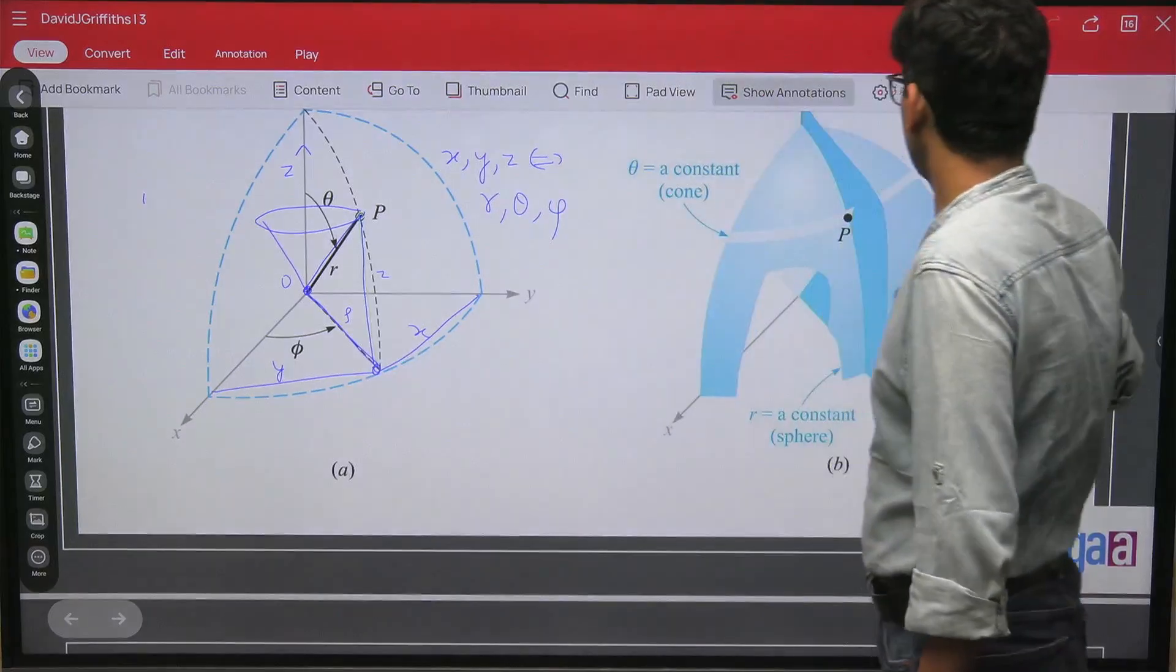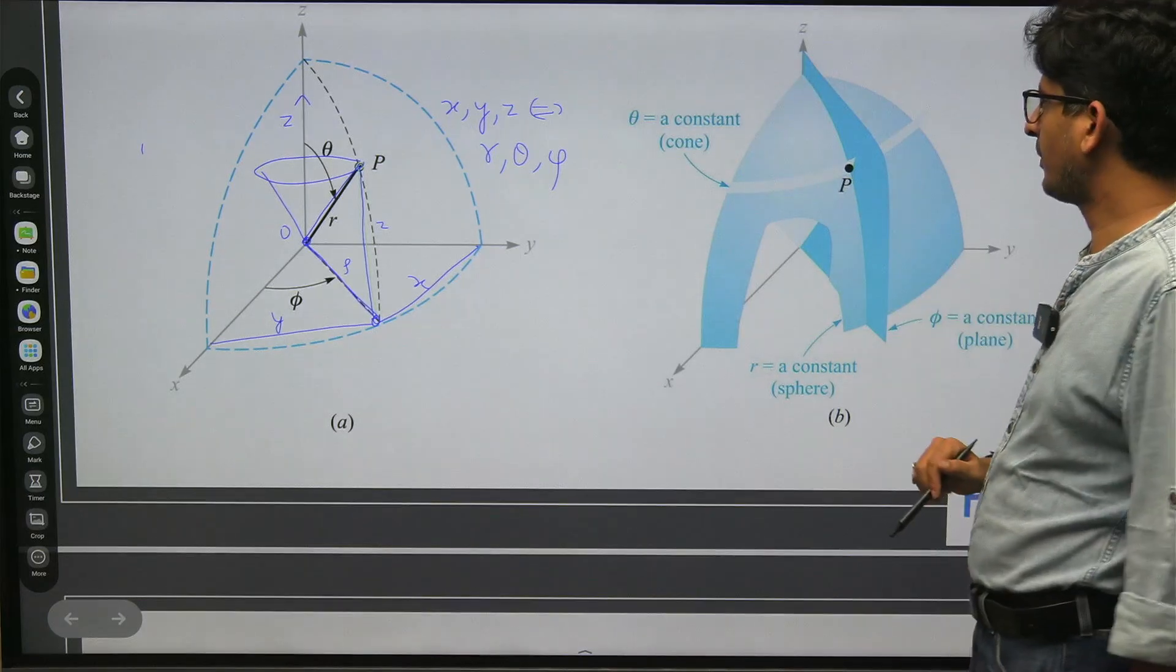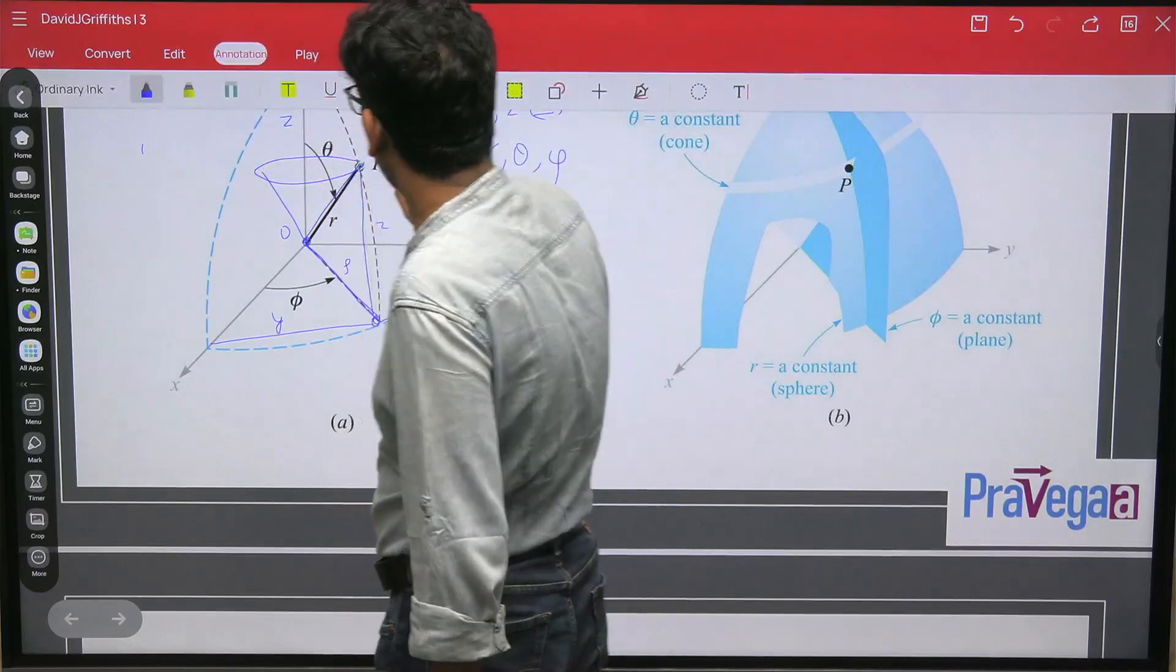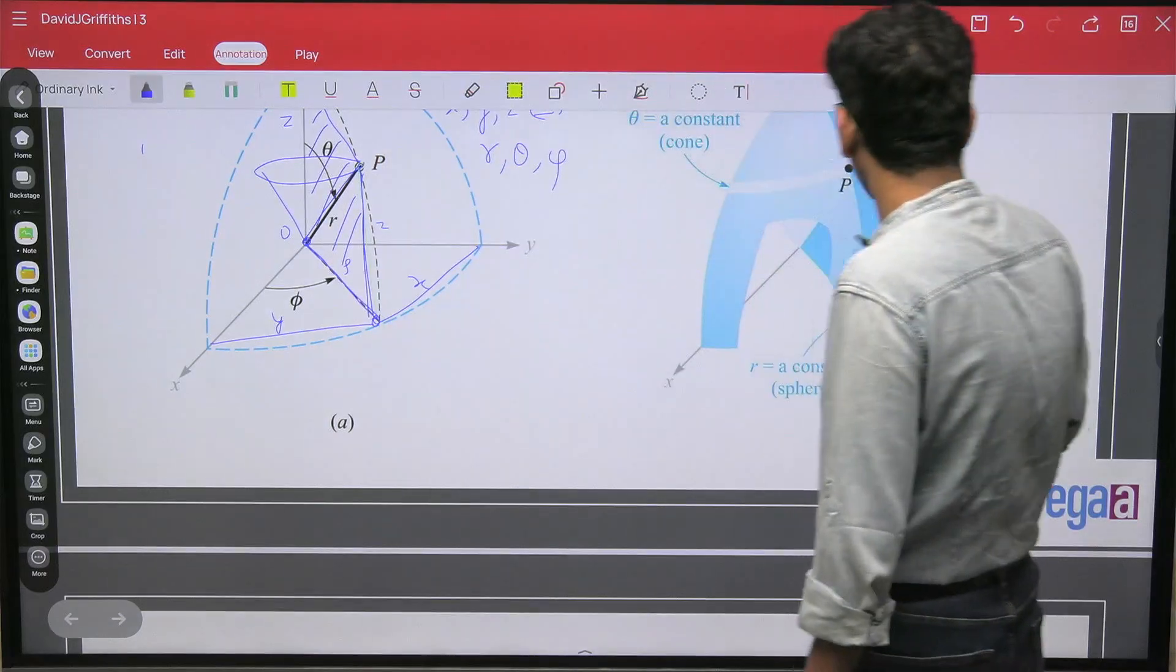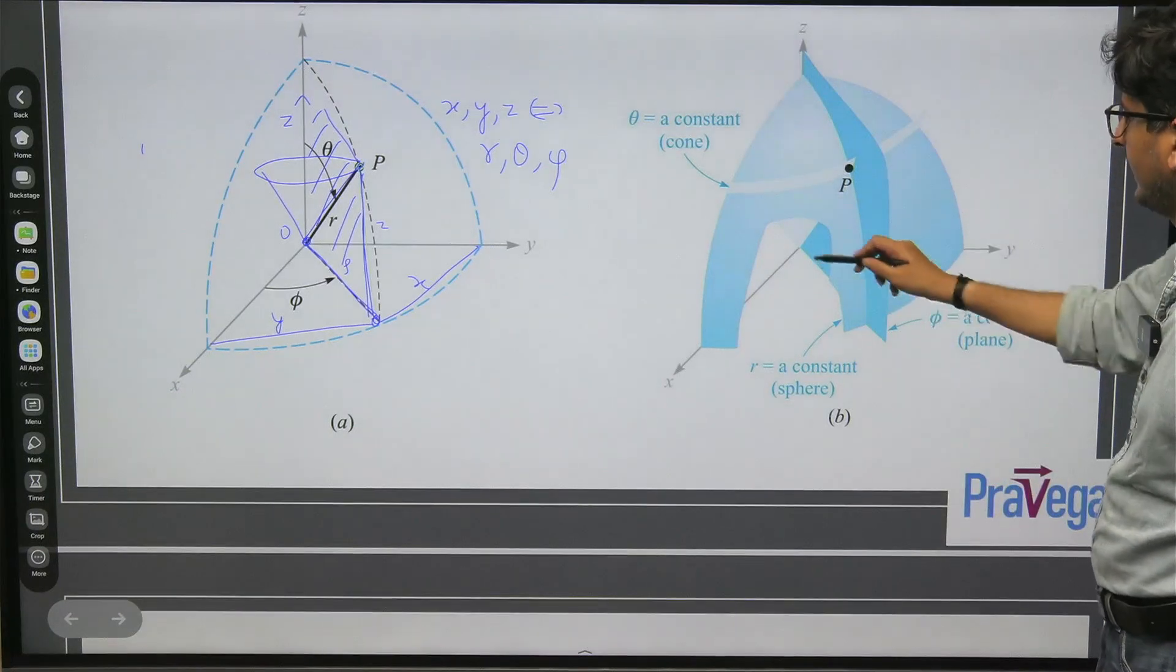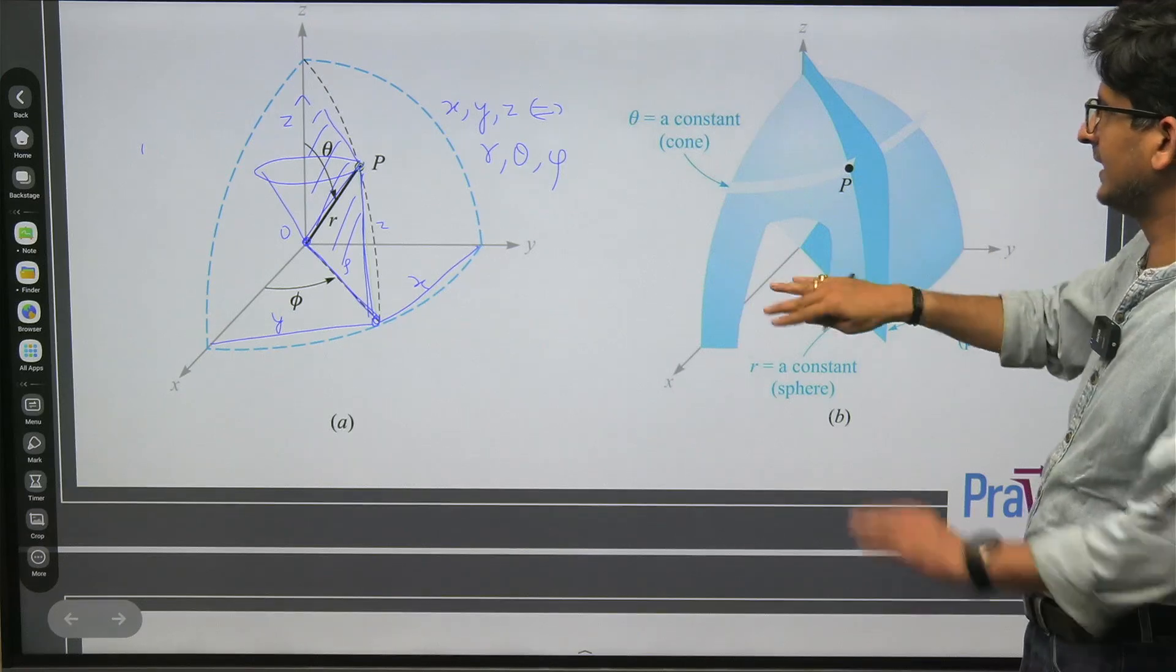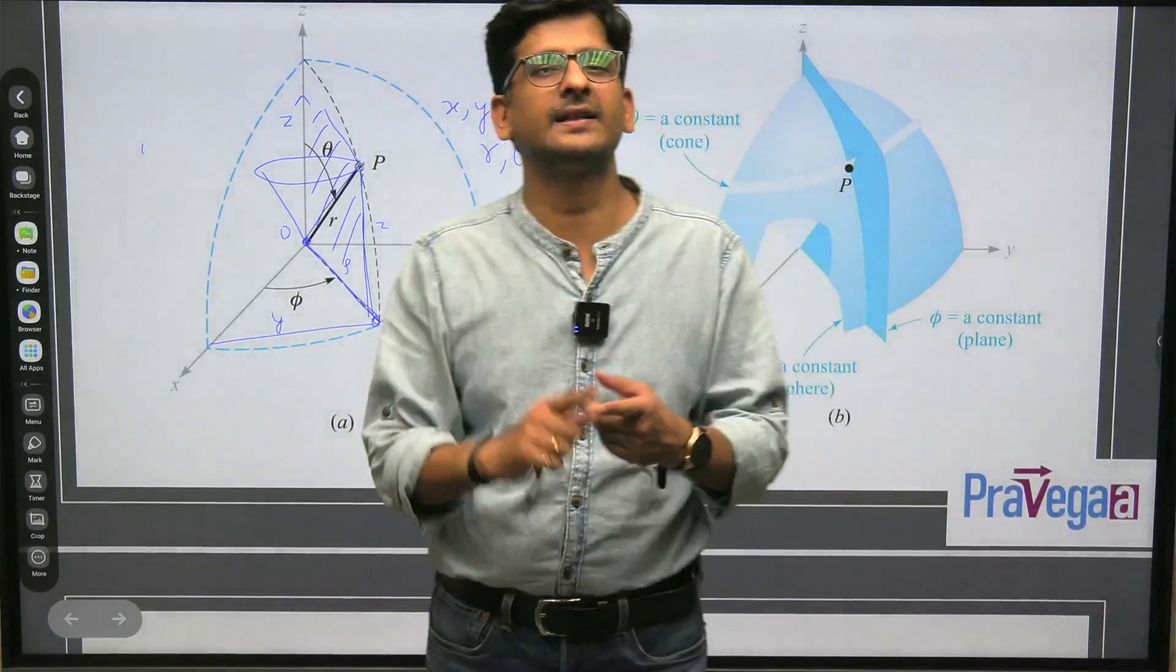So this is that cone which is passing through the point P. And there will be a plane which will be passing through this directly. You can make this plane and connect it here. This plane, you can see it here. This plane is the plane phi equals constant, because this plane is at constant angle phi. And the third one is the spherical surface with a constant radius.